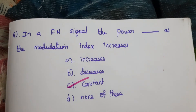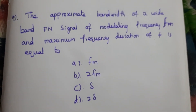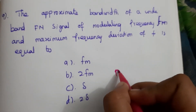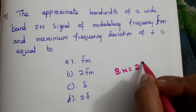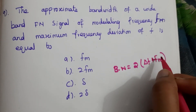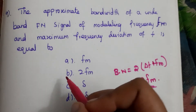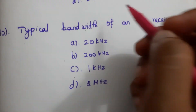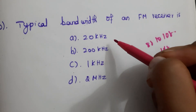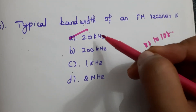Ninth question: The approximate bandwidth of a wideband FM signal with modulating frequency fm and maximum frequency deviation Δf is 2(Δf + fm), approximately equal to 2Δf. The answer is B. Tenth question: The typical bandwidth of an FM receiver is 20 kHz. The answer is A.